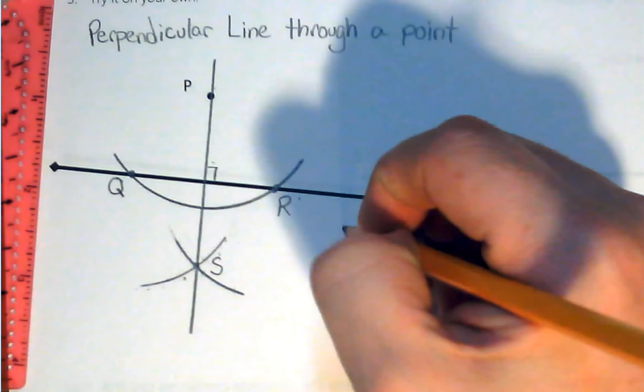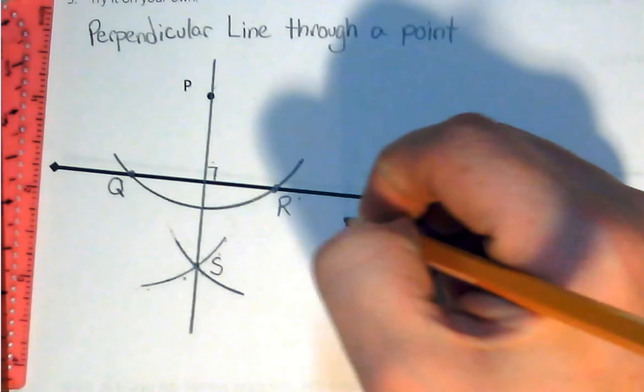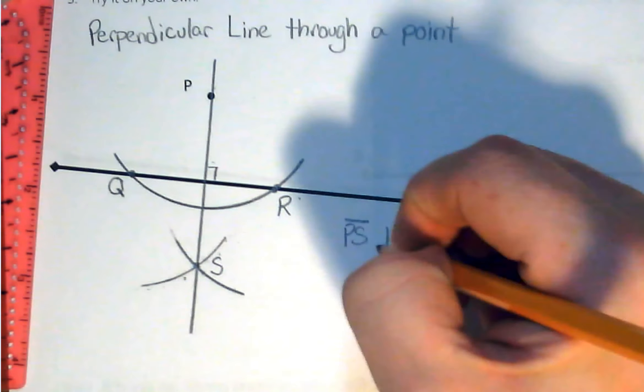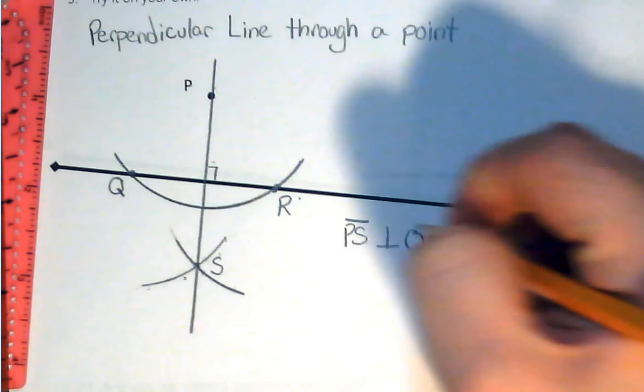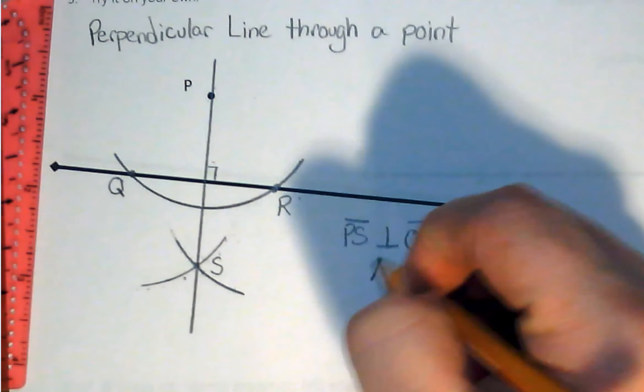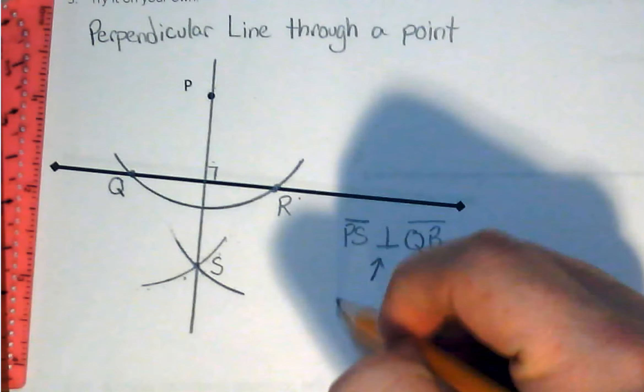So what we can say is that PS, this line we just drew, is perpendicular to that line QR. Now, keep in mind that that symbol means perpendicular.